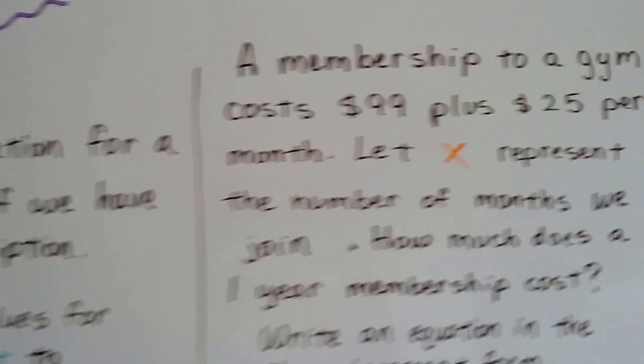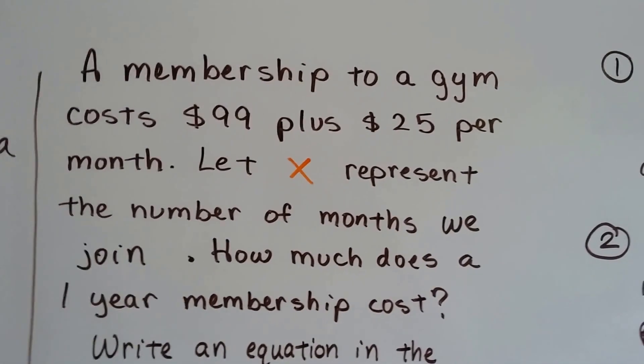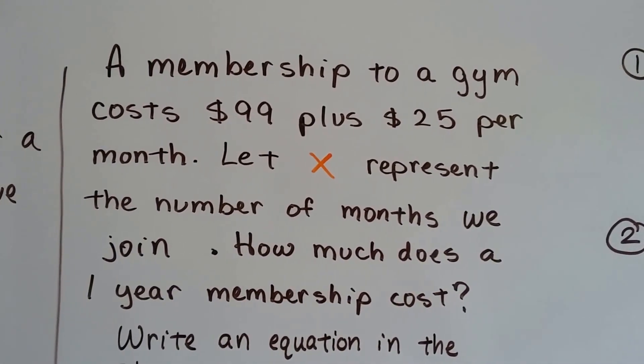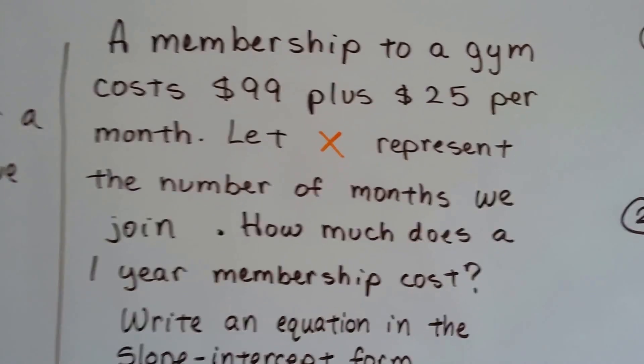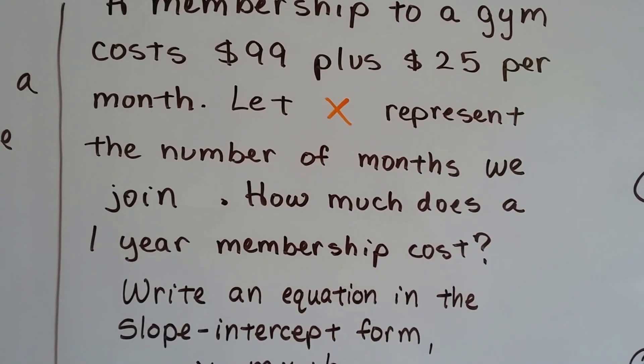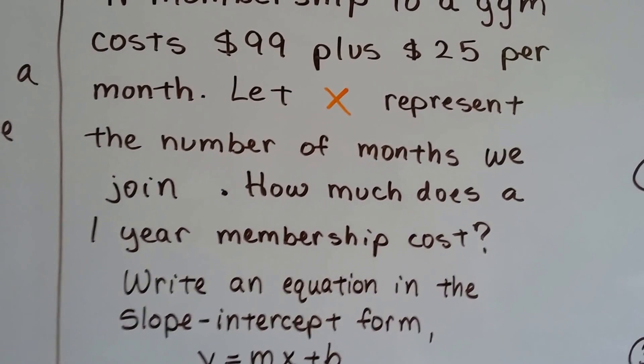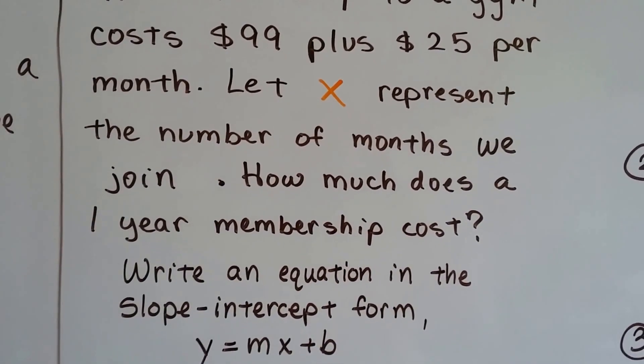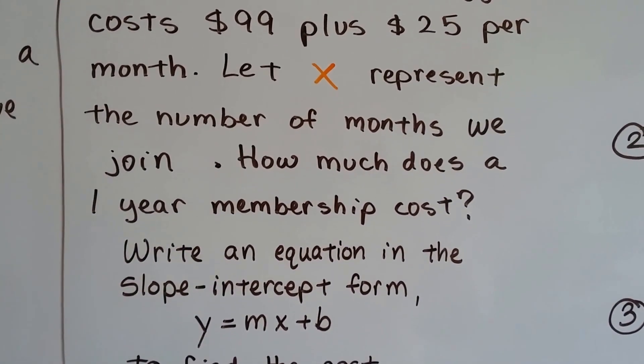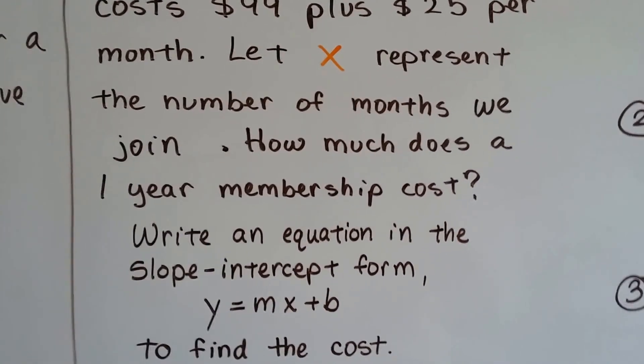A membership to a gym costs $99 plus $25 per month. Let x represent the number of months we join. How much does a one-year membership cost? Write an equation in the slope-intercept form y equals mx plus b to find the cost.